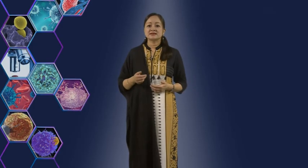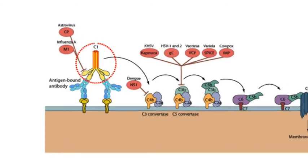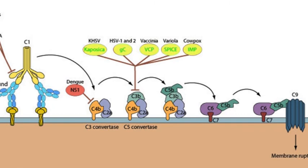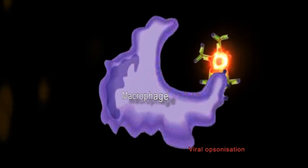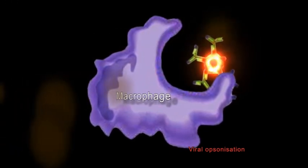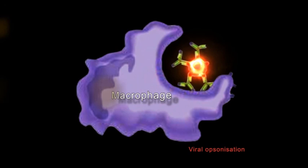Viral neutralization by antibodies can also occur after the virus has attached to the host cell. In such cases, antibodies prevent viral penetration into the host cell by binding to the epitopes which are required for penetration. Sometimes, if the induced antibody activates the complement system, it can cause lysis of the virions by the formation of membrane attack complexes. Antibody or complement can also agglutinate viral particles and function as an opsonizing agent to facilitate Fc or C3b receptor-mediated phagocytosis of the viral particles.